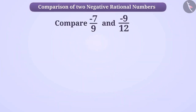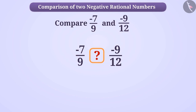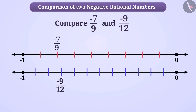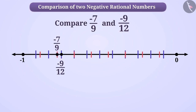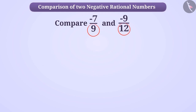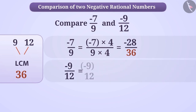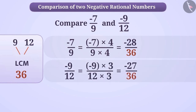Now, how will you compare negative rational numbers? Think for a while. Suppose we want to compare -7/9 and -9/12. We express them on a number line, and we can see that -7/9 is to the left of -9/12. Therefore, -7/9 is a smaller rational number than -9/12. Now let's make their denominators equal. First, we see that the denominator of both rational numbers is a positive integer. Then we obtain the LCM of denominators 9 and 12 as 36. Using this, we find the equivalent rational number of -7/9 as -28/36 and that of -9/12 as -27/36.